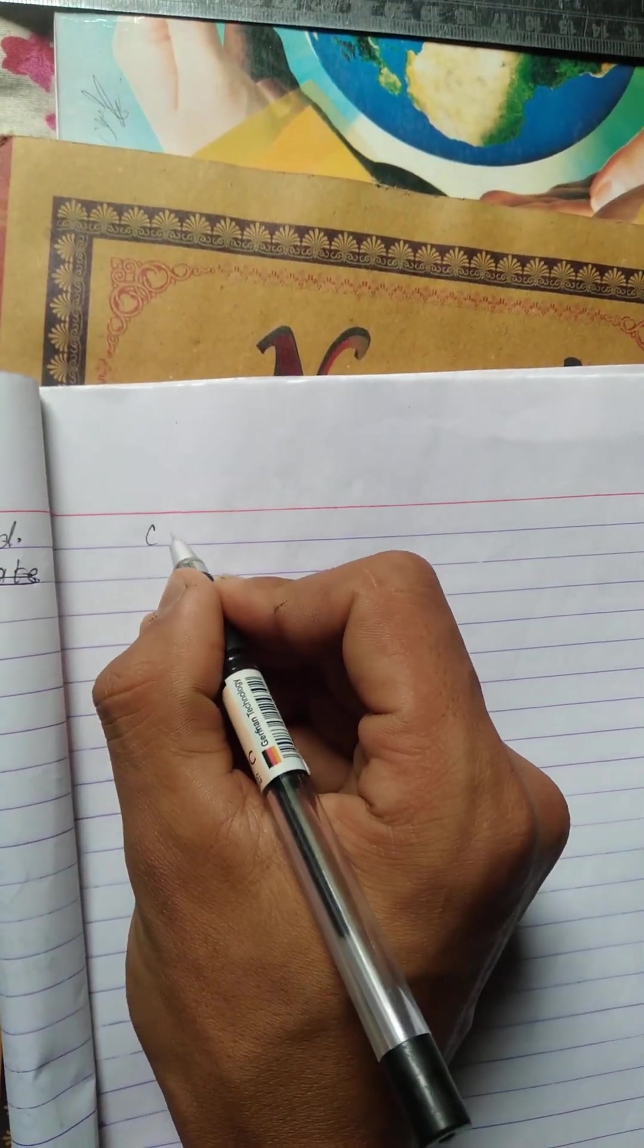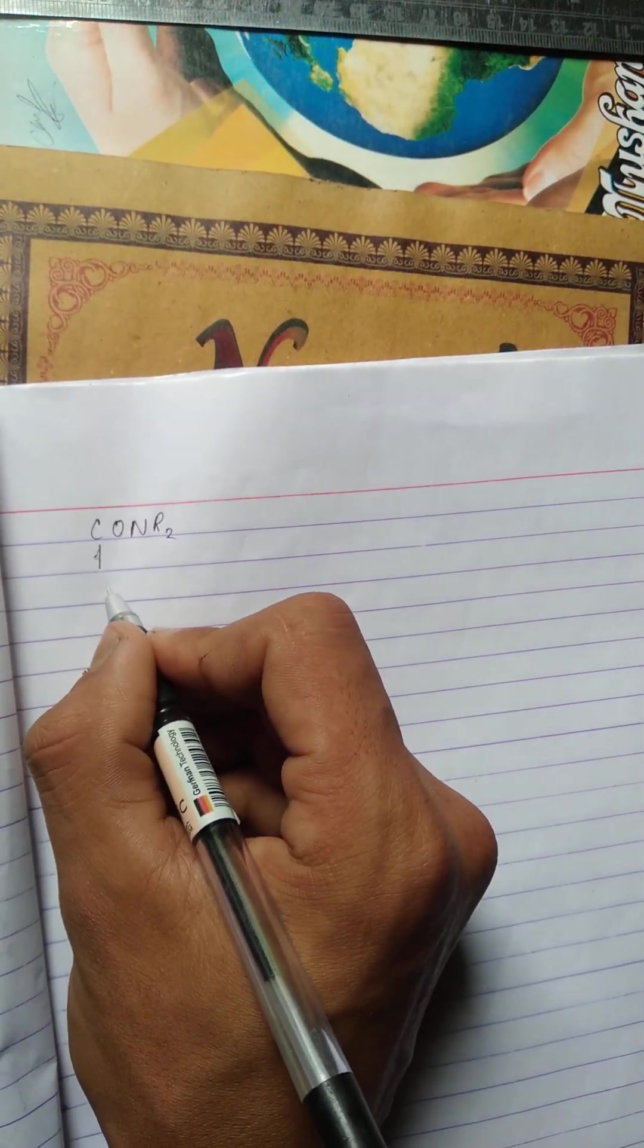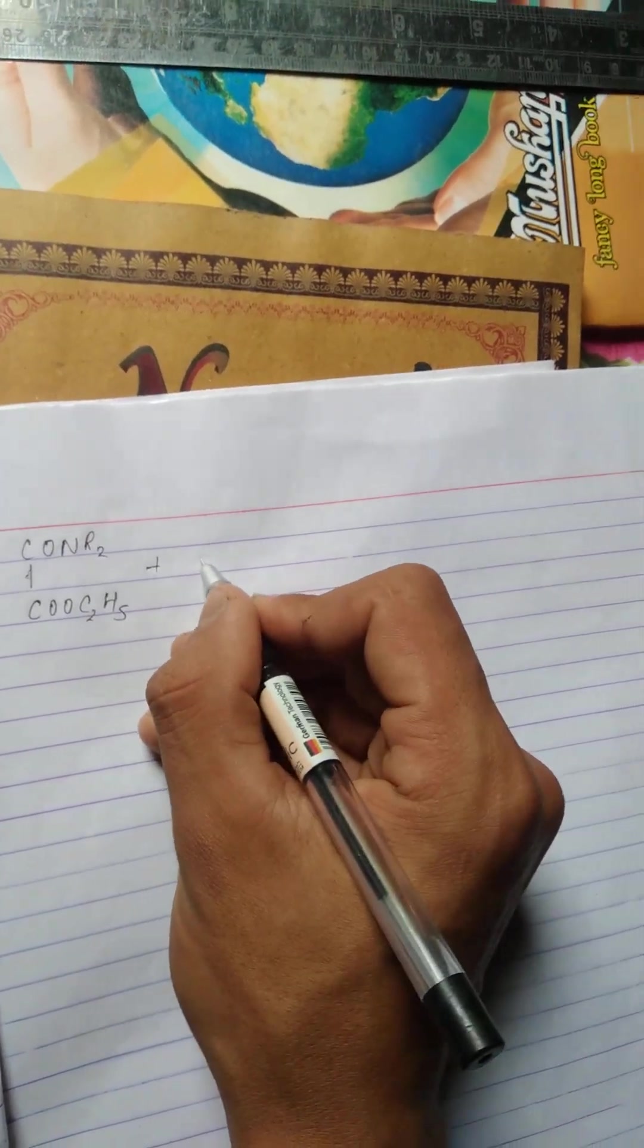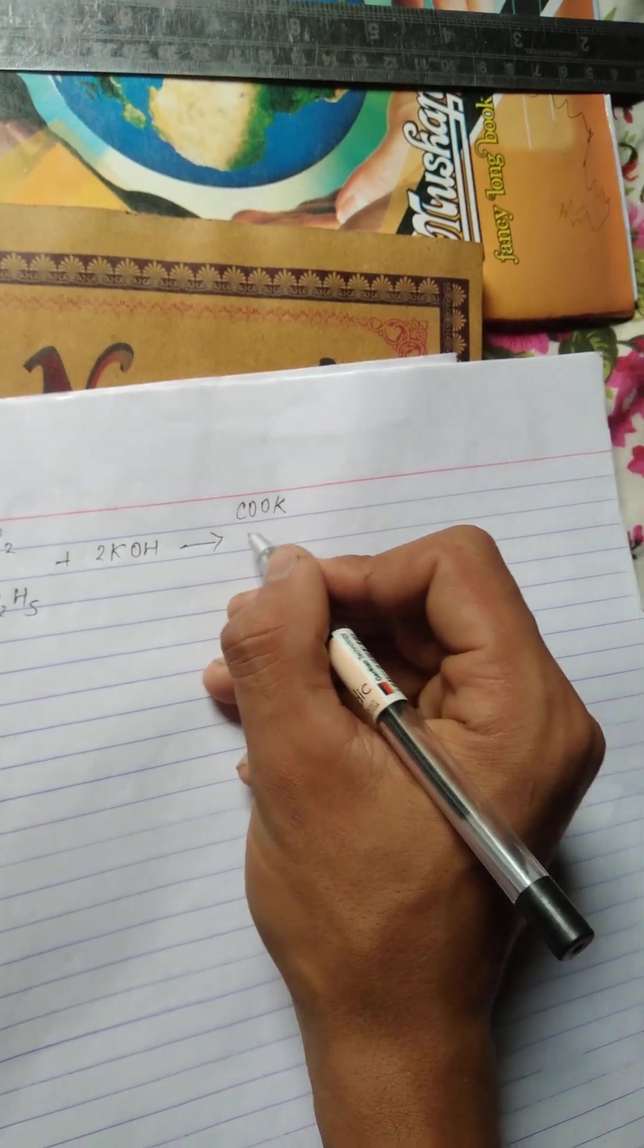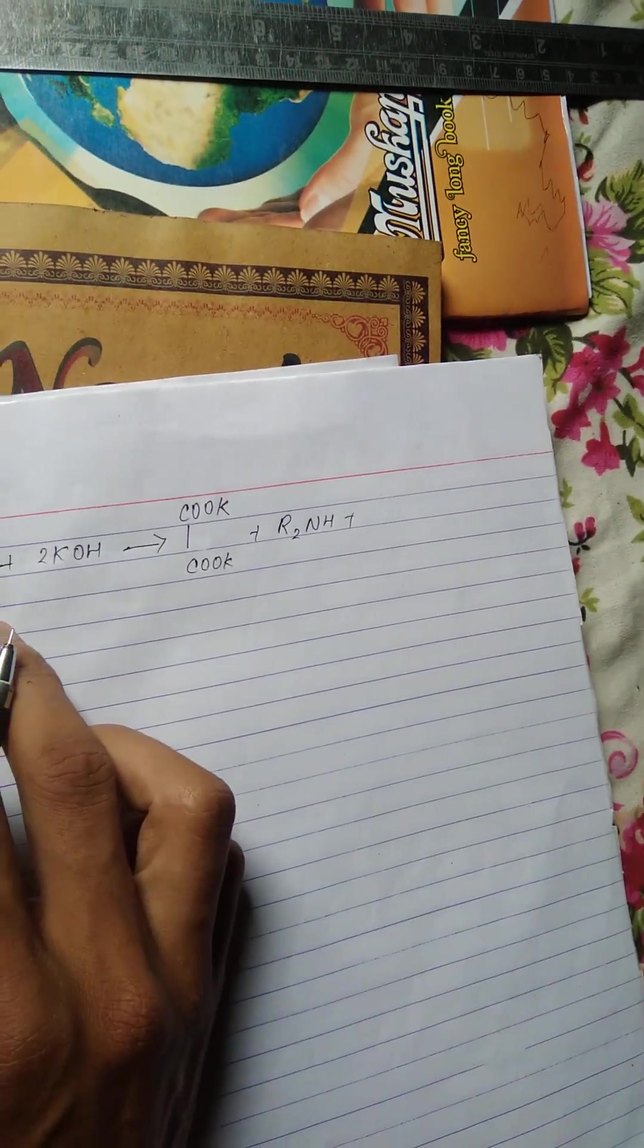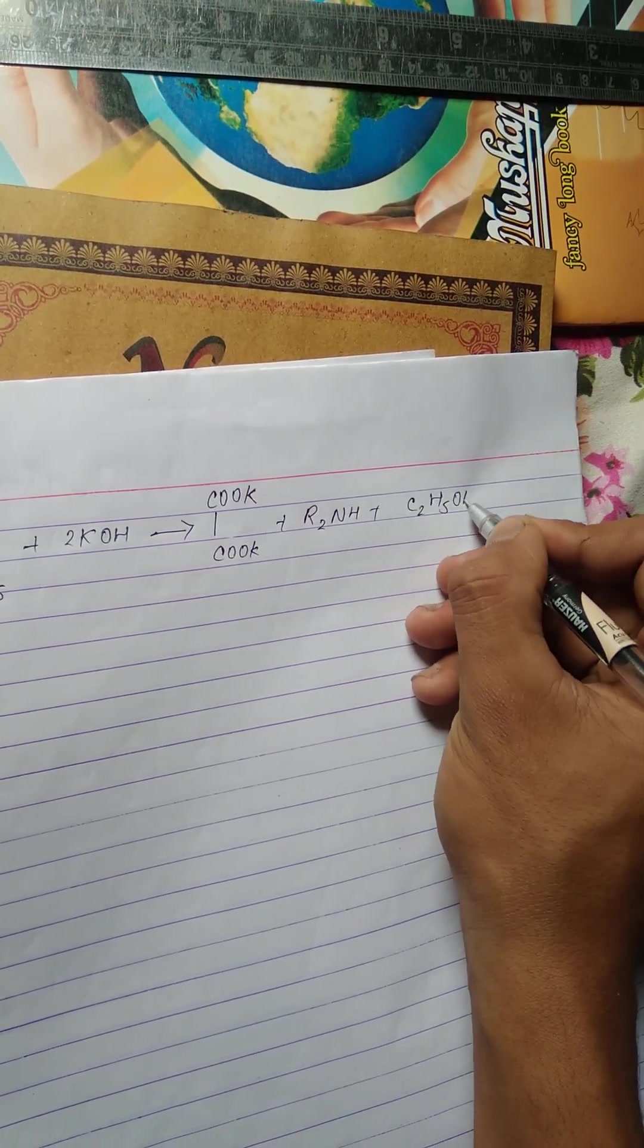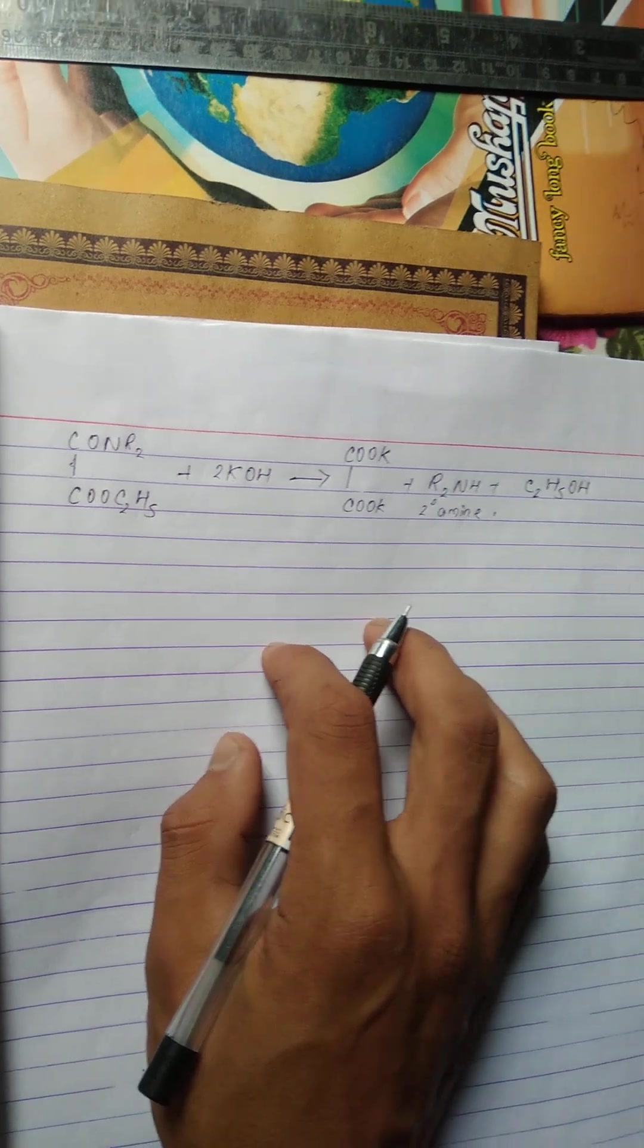Similarly, two degree amine: R2-N-CO-CO-N-R2 plus water gives R2-NH (secondary amine) plus oxalic acid. This is the separation process of one degree, two degree, three degree amine by Hoffman's method.